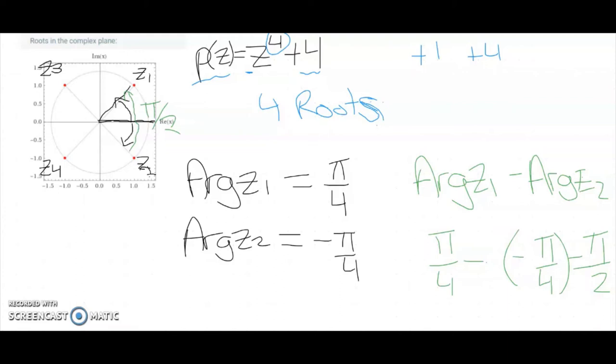So we can draw in our diagram that the argument between z2 and z1 is π on 2. And from our nth roots of unity, this is true for the argument between all of our complex roots. That's π on 2, π on 2, and π on 2.